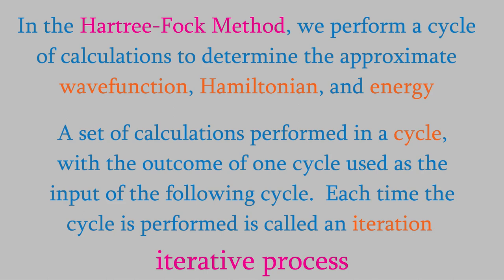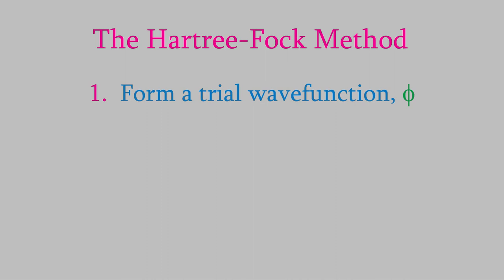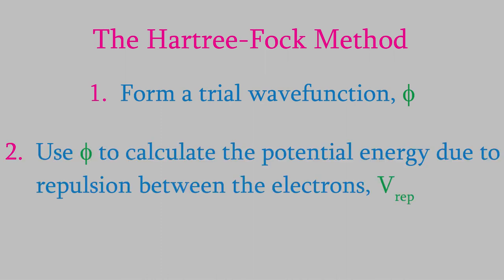So how do we perform the Hartree-Fock method? The first step is to create a trial wave function. As we saw in the last video, the trial wave function is often composed of several hydrogen wave functions, Slater-type orbitals, or sums of Gaussian curves. We now use the trial wave function to calculate the potential energy due to the repulsion between the electrons. For example, if our system were a helium atom, there are just two electrons, so to get the potential energy due to the repulsion, we'd solve this equation.